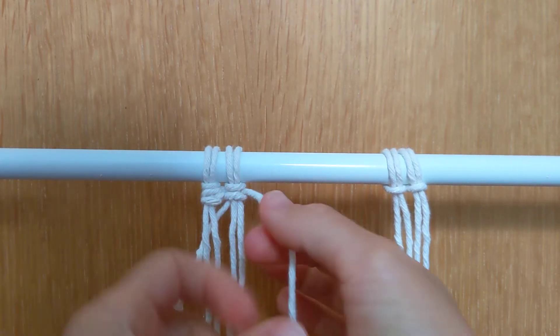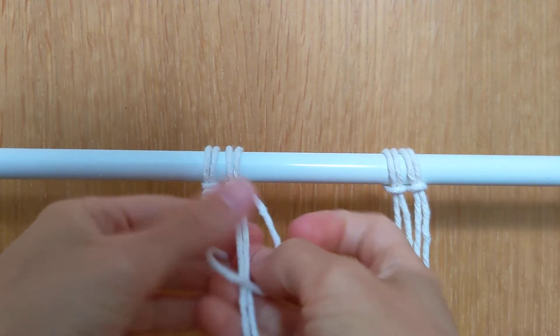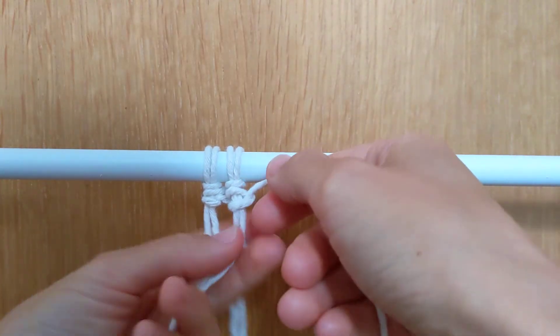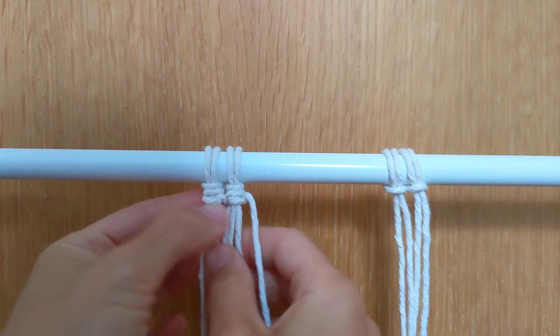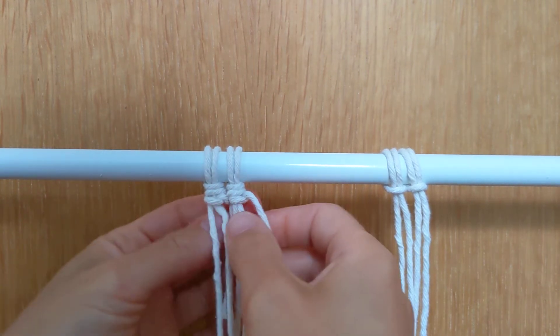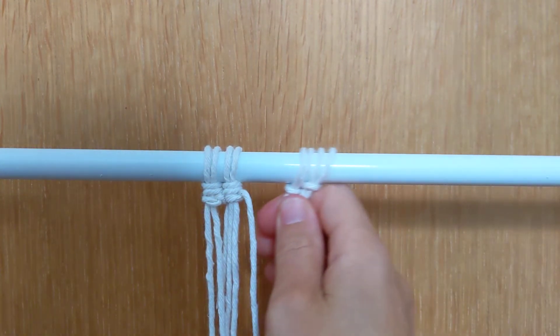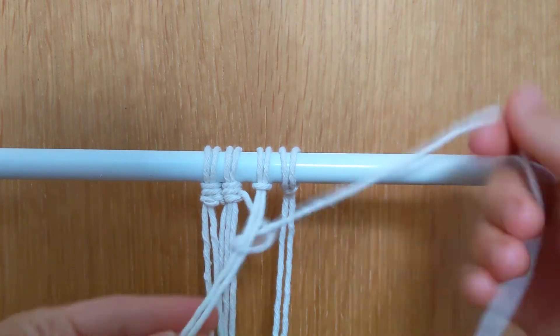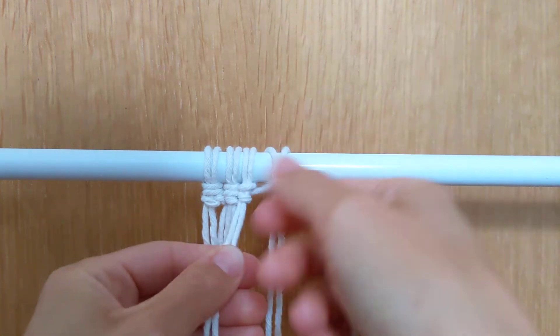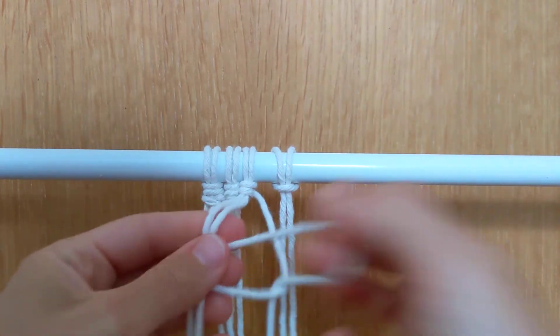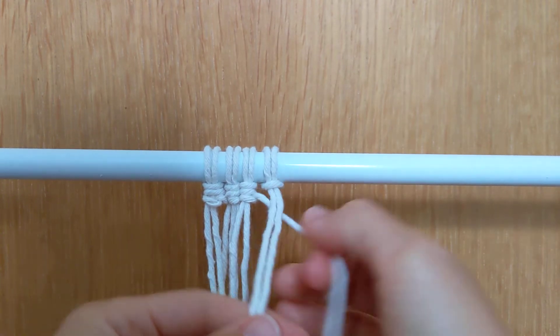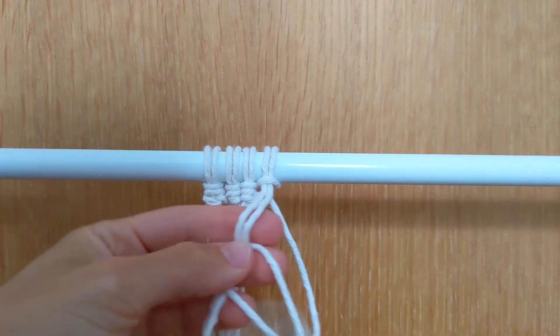I'm going around the front, around the back, and through the loop to continue with my double vertical half hitch. I'm going to bring these sets over and do the same: around the back, around the front, through the loop.